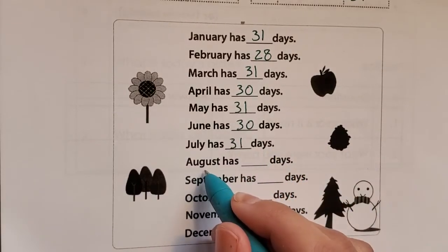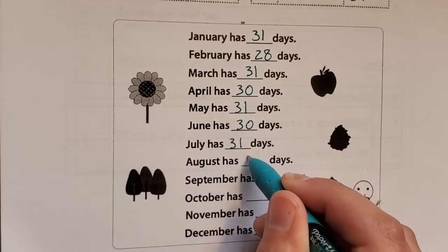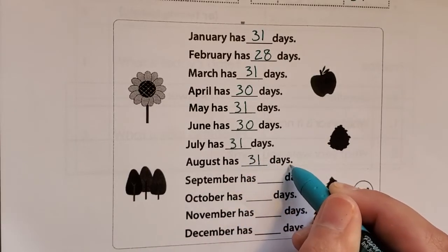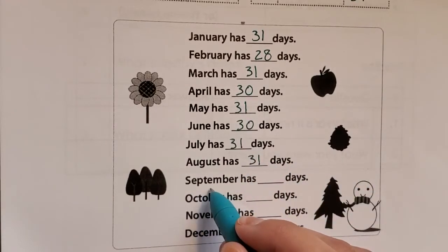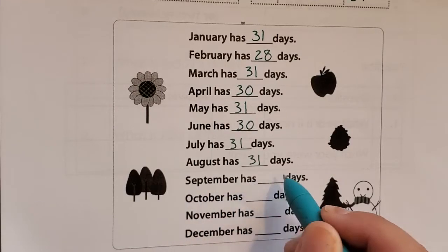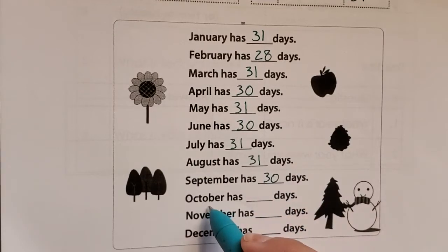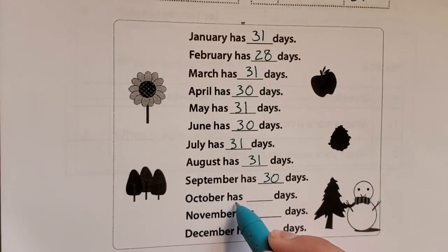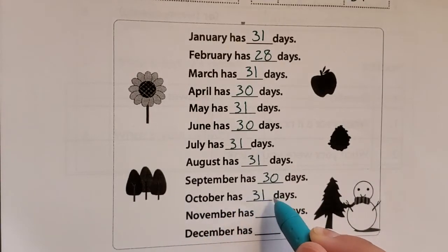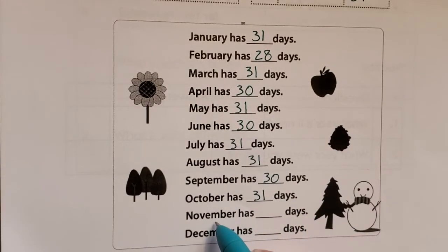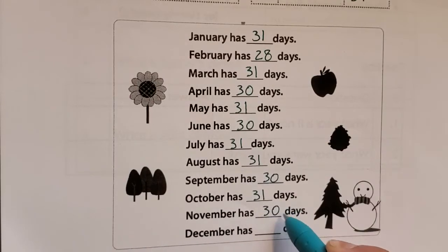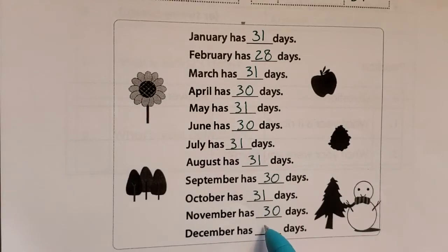July has 31 days. August has 31 days. September has 30 days. October has 31 days. November has 30 days. December has 31 days. Thank you.